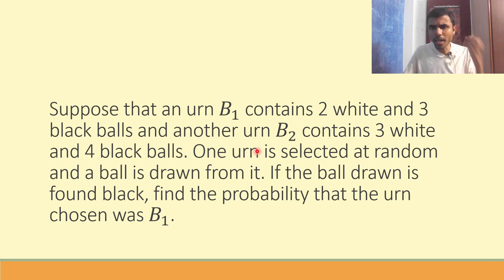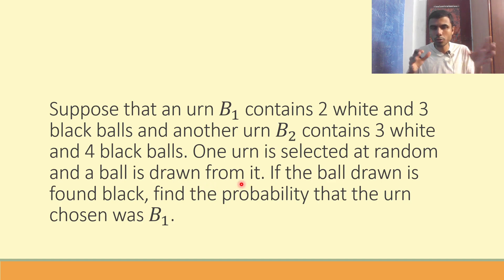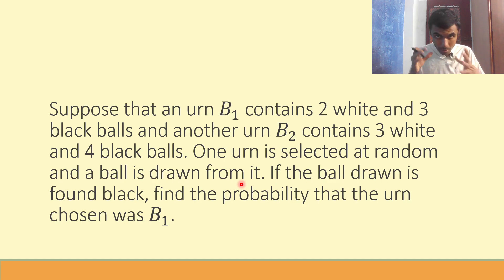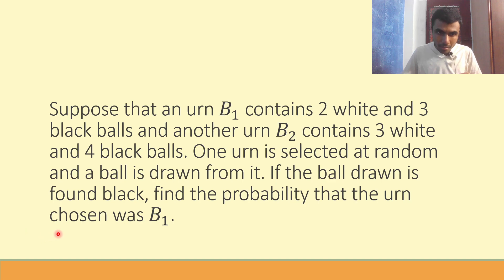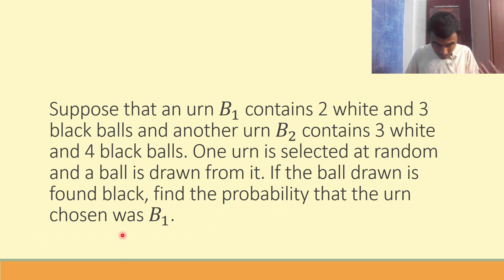Next, one urn is selected at random and a ball is drawn from it. Two bags are there; out of that you take any one bag and try to select a ball. If the ball drawn is found black, then find the probability that the one chosen was B1.